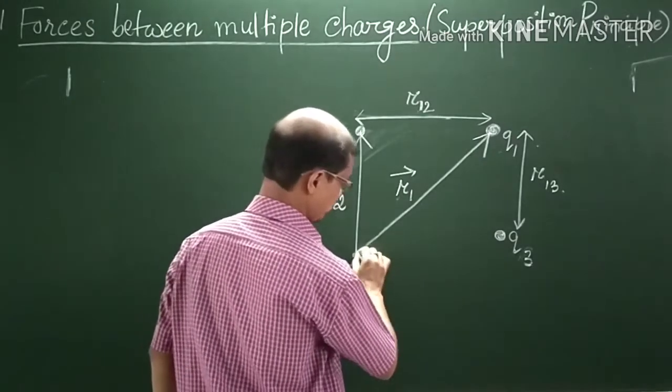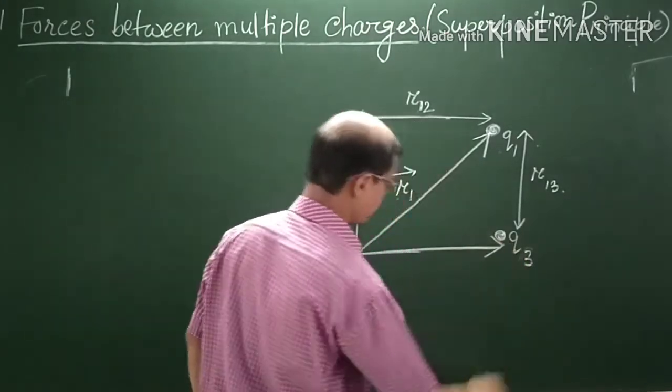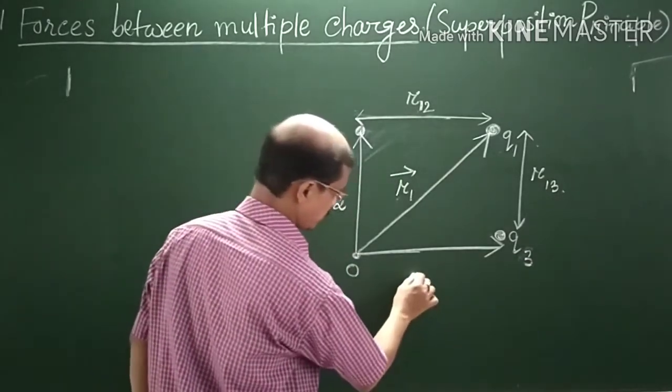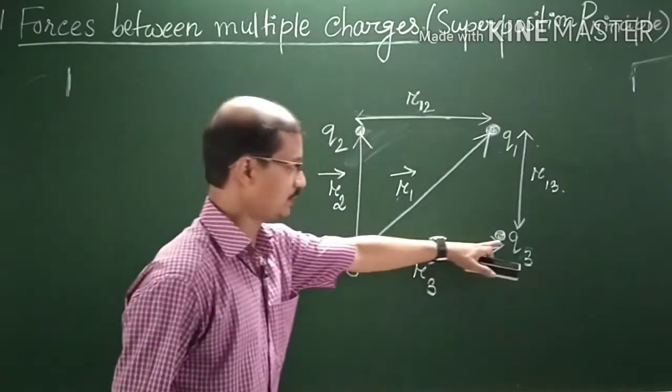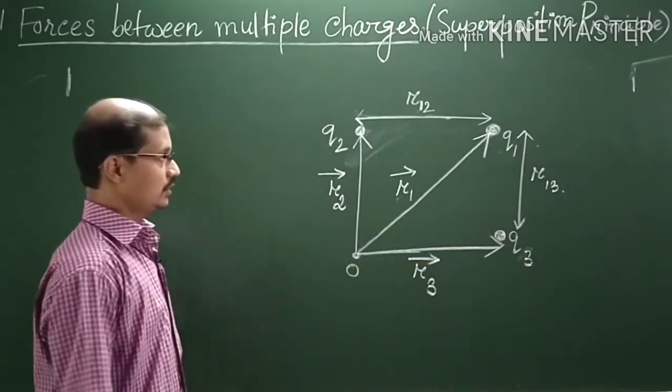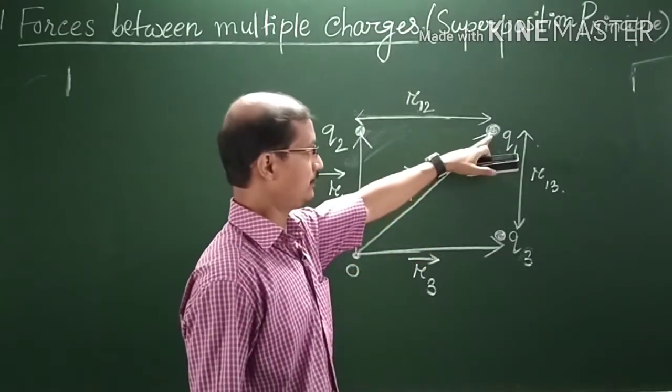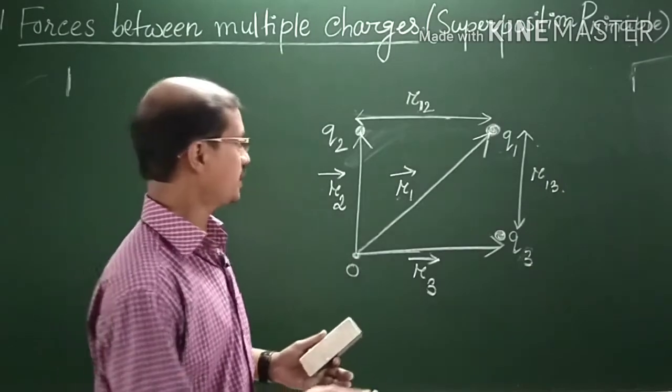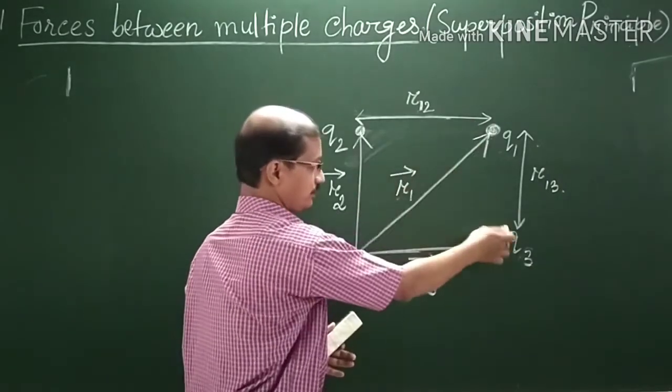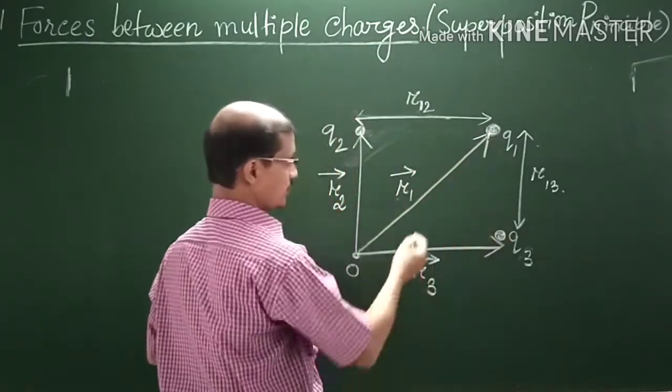R2 is the position vector of Q2 with respect to O. Next, you join OQ3. This is your position vector R3, the position vector of Q3. Now you have to calculate the net force on the charge Q1. All are like point charges.